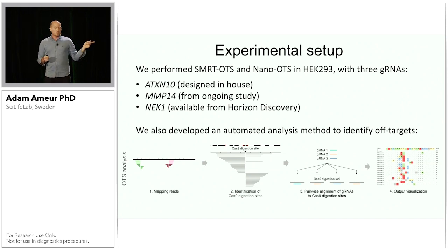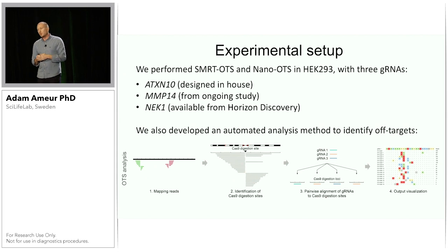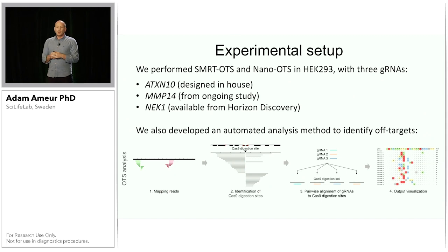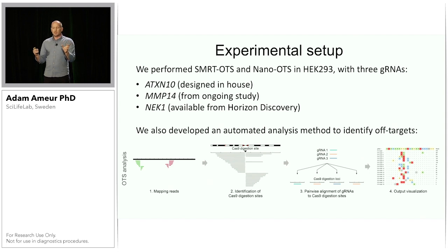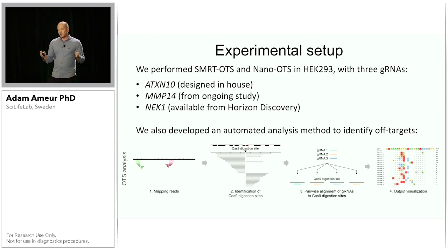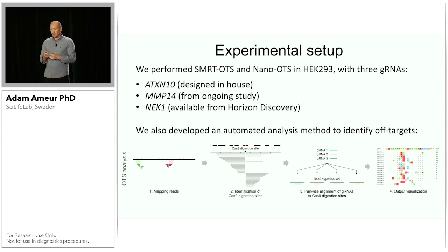The analysis works by first mapping the reads. Because these molecules are cleaved by Cas9, it gives rise to a very specific type of pattern. We can identify peaks very easily by looking for patterns where reads are starting or ending at the same position. We then take each peak region, look into it to see if we have a sequence similar to one of our guide RNAs, and assign each peak to a specific guide.